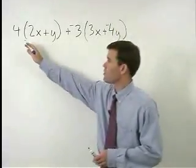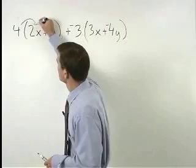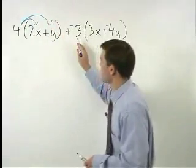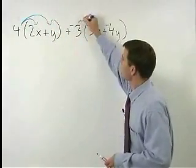Now we can distribute the 4 through the first set of parentheses and the negative 3 through the second set of parentheses.